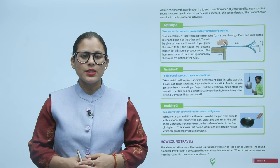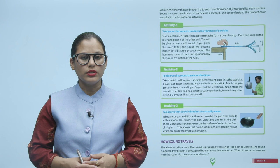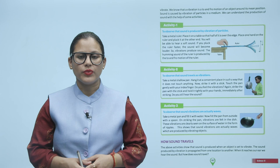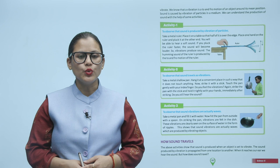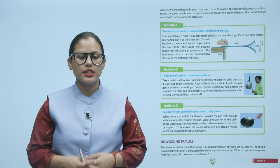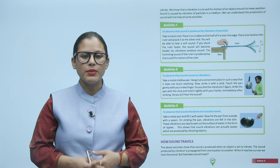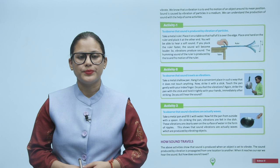Activity 1: To observe that sound is produced by vibration of particles. Take a metal ruler and place it on a table so that half of it is over the edge. Place one hand on the ruler and pluck it at the other end. You will be able to hear a soft sound. If you pluck the ruler fast, the sound will become louder. So vibrations produce sound — the humming sound of the ruler is produced by the to-and-fro motion of the ruler.